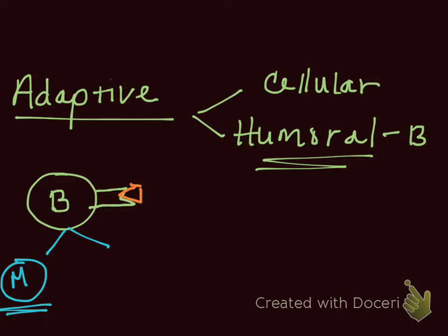One type of cell is going to be a memory cell. These memory cells are going to stick around potentially for your lifetime and they are going to resemble this cell right here. They're going to have this specific antigen receptor, so that if this orange antigen ever comes into your body again, you're going to be able to recognize it super fast.